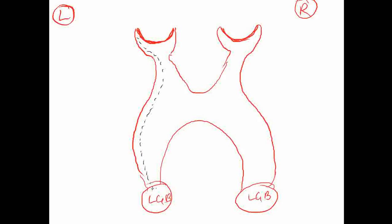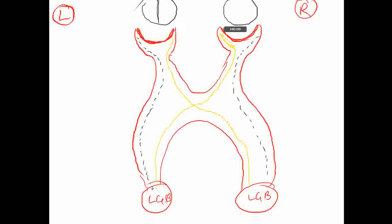Some of the fibers will go to the other side. Similarly, from the other side, the medial fibers will go and relay here, and the lateral fibers will go laterally to the lateral part of that eye. The main confusion lies here. This is regarding what you see.